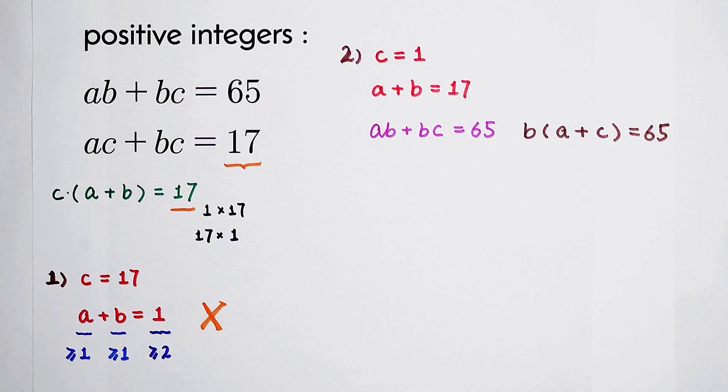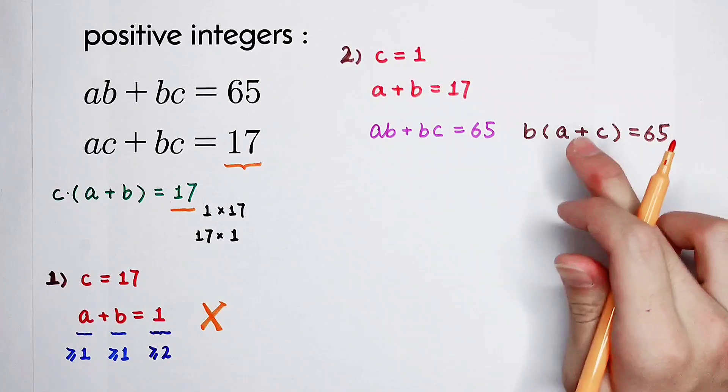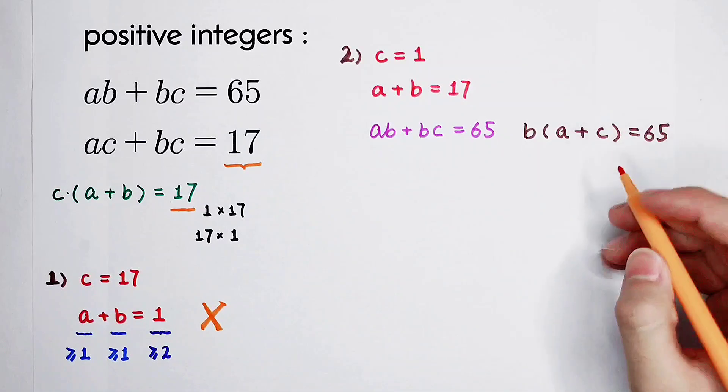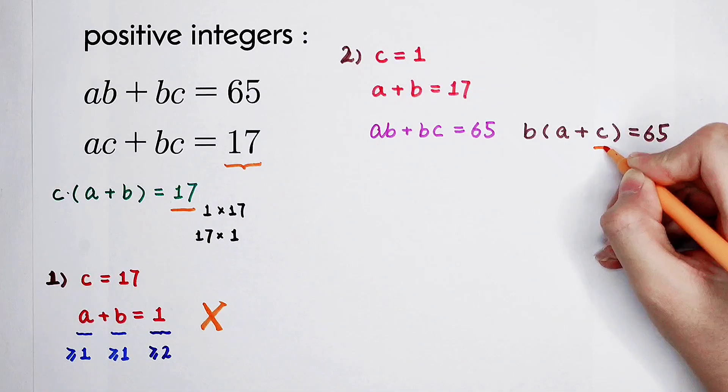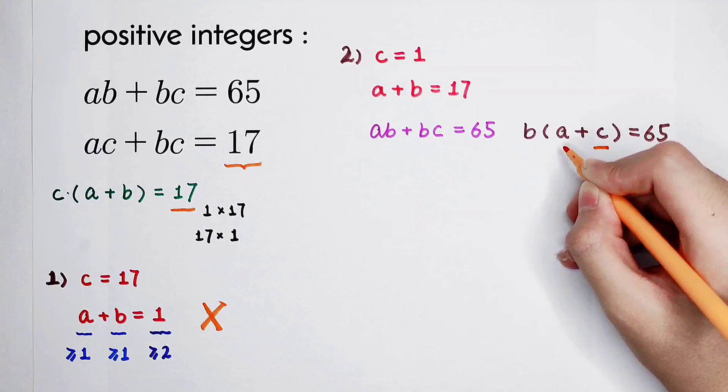b times a plus c is 65. Then 65 is not so lucky as 17. Here is b, here is a, here is c. And we know the value of c is just 1. How should we deal with this a?